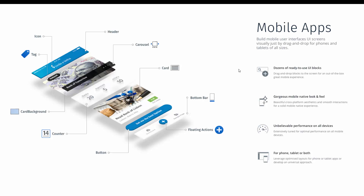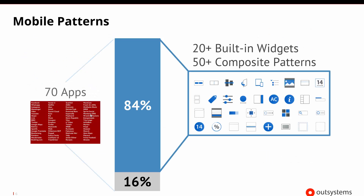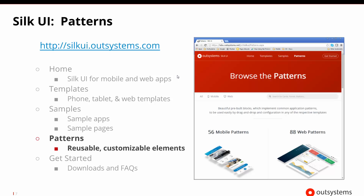When we think about mobile apps, you can break down the screen of a mobile phone application into different types of information. The screen may have a header across the top, icons and tags, cards and carousels, counters, and buttons and actions at the bottom. As we look at different types of screens, we see these things occurring more and more. So by doing an analysis of 70 apps and finding the 20-plus built-in widgets, and the 50-plus composite patterns that are bigger and more complex, we'd want to know what those patterns are and how to use them.